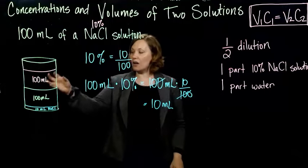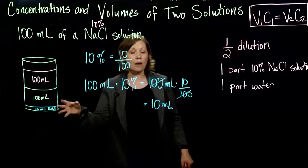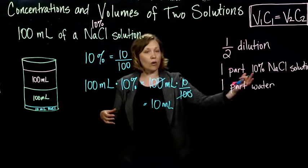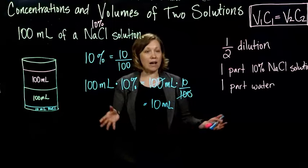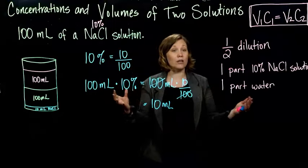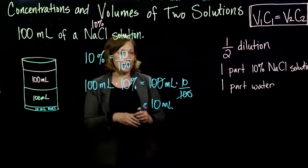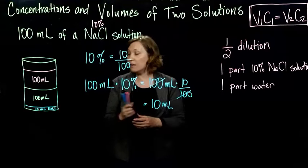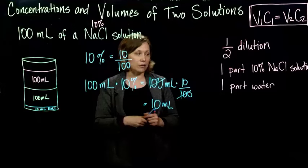So if I add another 100 milliliters of water, I now have 10, did the amount of sodium chloride that I've got in there change? No, it stays the same. I'm diluting it. I'm adding, I'm increasing the total volume. So now I've got 10 milliliters in two, or 10 milliliters of sodium chloride in 200 milliliters of water.